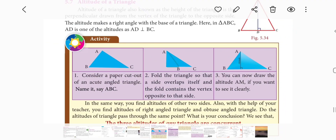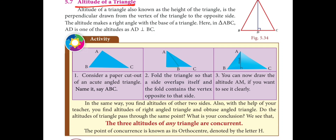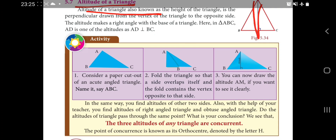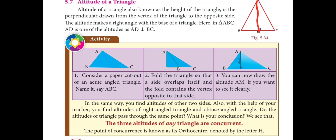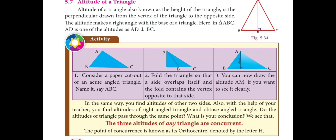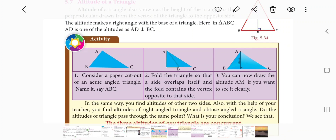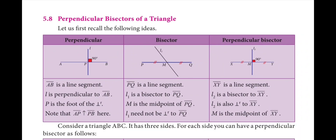Altitude of a triangle: also known as the height of the triangle. The altitude makes a right angle with the base. The three altitudes of any triangle are concurrent, meaning all three pass through a single point.